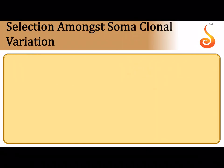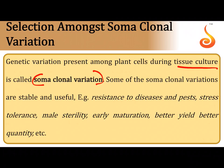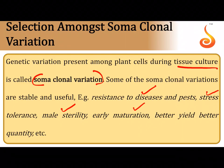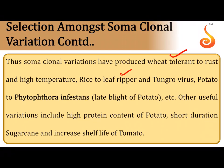Gamma ray treatment of the Pelleta rice line in Indonesia produced the high-yielding variety Atomita-2, resistant to the brown plant hopper. Another high-yielding variety, Ramy, was also obtained by gamma irradiation. Somaclonal variation refers to genetic variation present among plant cells grown in tissue culture. By selecting these variations during micropropagation, one can obtain disease-resistant, stress-tolerant, or early-maturing plants. Examples include wheat tolerant to rust and high temperature, rice tolerant to leaf ripper and tungro virus, and potato tolerant to late blight fungus Phytophthora infestans.